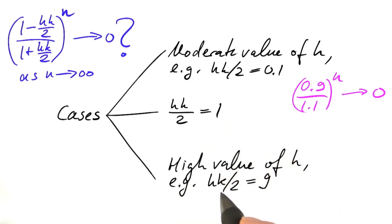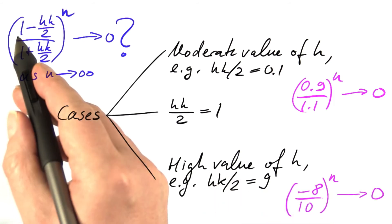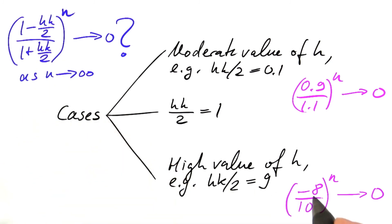And if we use a really high value of h, for instance, such that hk over 2 equals 9, we get something like 1 minus 9 equals minus 8 divided by 1 plus 9 equals 10. This is a negative number with absolute value less than 1. So if we take higher and higher powers, the result converges to 0. We also have stability in this case.